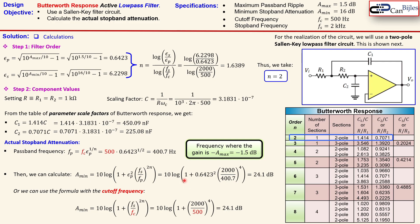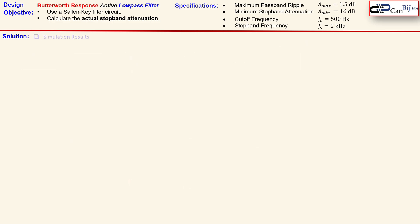Okay, we have our component values. We have our results for the A_min and the passband frequencies. Let's now go to the simulation result and check our calculations.